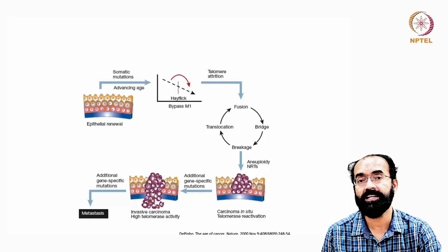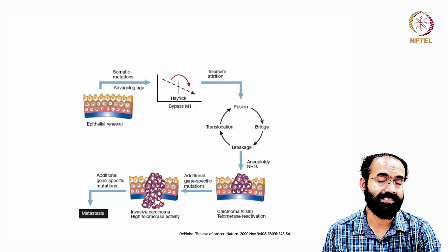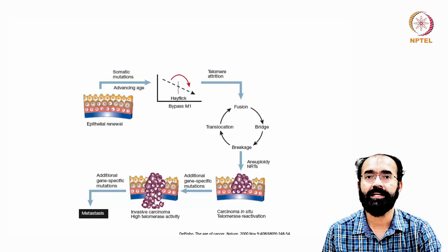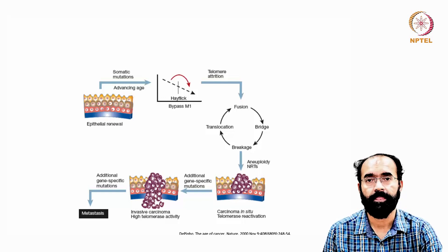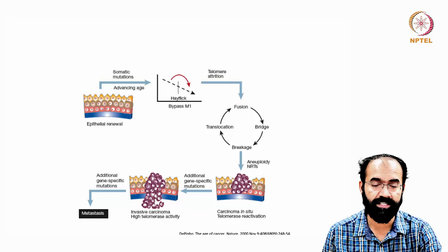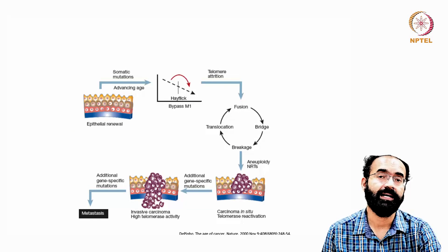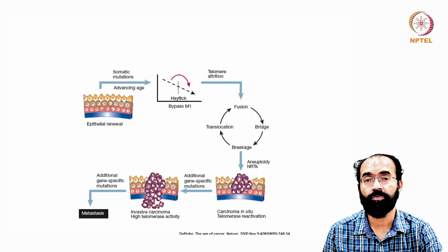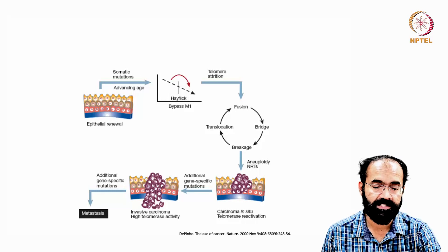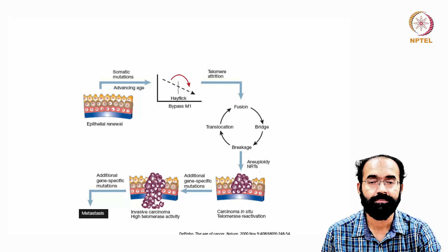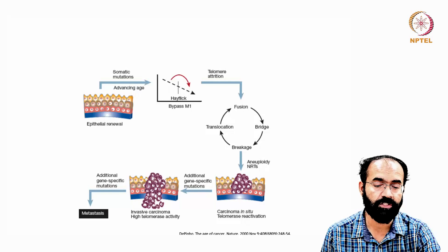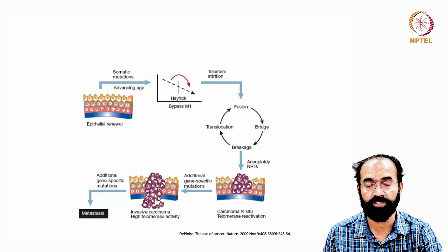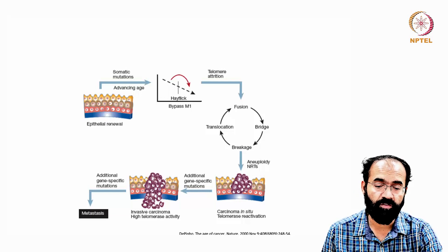As cells continue to divide, if DNA damage has occurred on a skin cell, that cell will die and be replaced by a new cell. Epithelial cells face this challenge constantly and continue to renew. If they bypass the Hayflick limit and telomere length continues to shorten, genomic instability begins. This can lead to chromosomal fusion, chromosomal bridge formation, breakage, or translocation — continuing in a cycle that often results in aneuploidy.